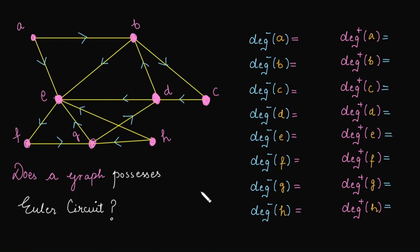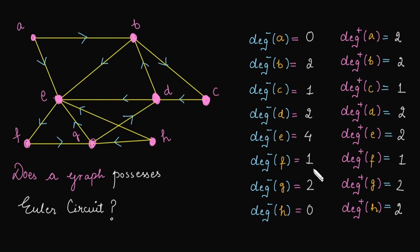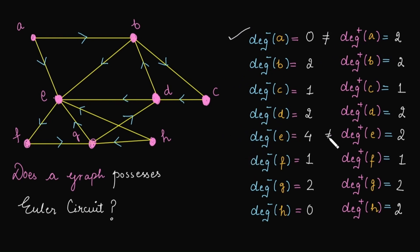Let's determine whether the next graph possesses an Euler circuit. Calculating in-degree and out-degree of each vertex, we observe that vertices A and H have in-degrees of 0 — so we have at least two vertices with in-degree 0. Therefore the graph does not possess an Euler circuit. Furthermore, using the theorem, the in-degree and out-degree of vertices A, E, and X are not equal, giving us multiple reasons to confirm the graph does not possess an Euler circuit.